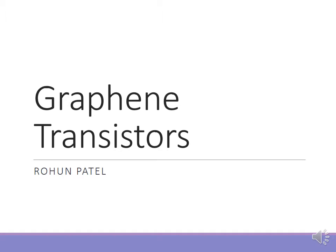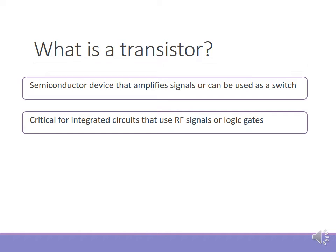Hey guys, I'm going to talk to you today about graphene transistors. I'm going to start by quickly reviewing what a transistor is. A transistor is a semiconductor device that either amplifies a signal or it can be used as a switch. It's an active device, and they're critical for integrated circuits that either use RF signals or are made of logic gates.